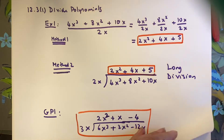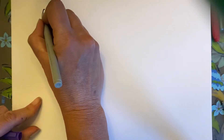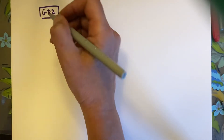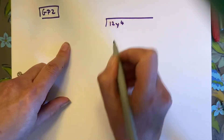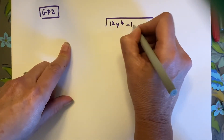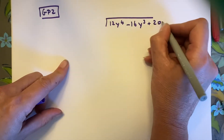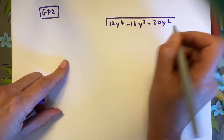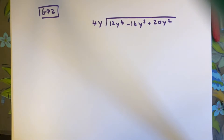I'm going to ask you to try one more before we move on, because we're going to do a more complex version of this and I want you to nail this first. Guided practice number 2: divide 12y to the fourth minus 16y cubed plus 20y squared by 4y. Pause the video and try it.